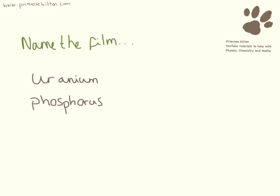You need to be really familiar with your periodic table, so I'd like you to have a go at guessing what film this is. Find uranium and phosphorus, then write down the chemical symbols and tell me what film this is.